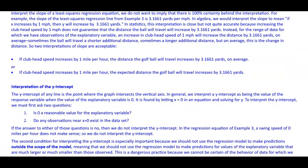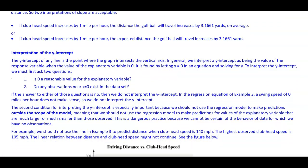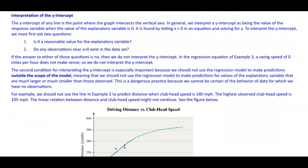Now the interpretation of the y-intercept. The y-intercept of any line is the point where the graph intersects the vertical axis. In general, we interpret a y-intercept as being the value of the response variable when the value of the explanatory variable is zero. It is found by letting x equals zero in an equation and solving for y. To interpret the y-intercept, we must first ask two questions.